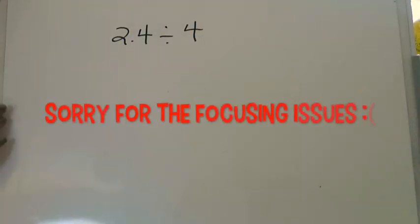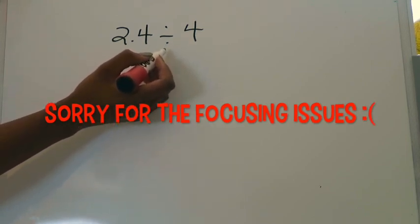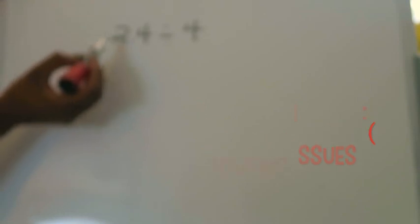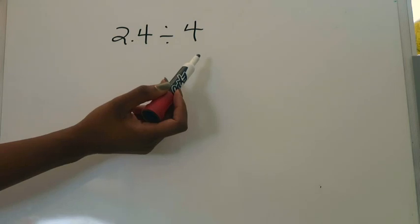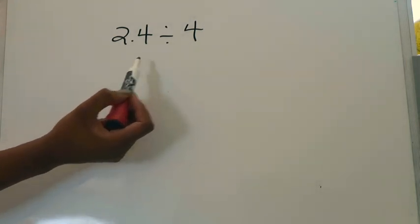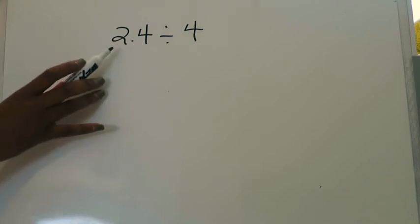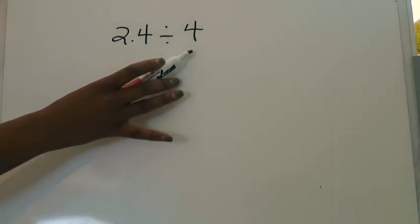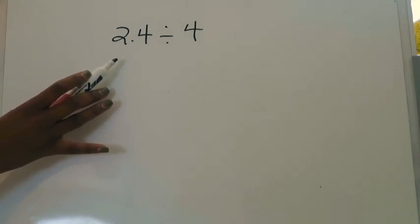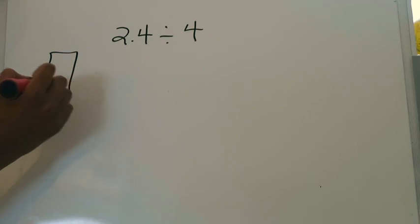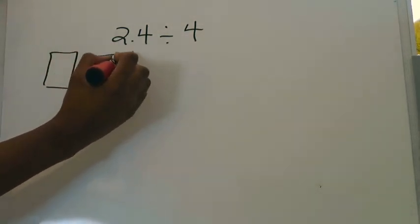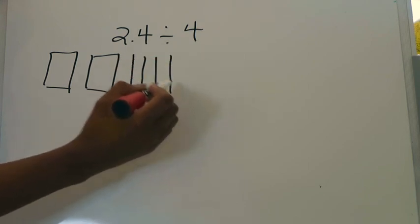Here we have our first example: we are dividing the decimal two and four tenths by four. The first thing to remember is that two and four tenths is your dividend — what is being divided — and four is your divisor. When dividing a decimal by a whole number, your divisor tells you how many groups you're trying to create out of your dividend. So the first thing you want to do is model out your dividend.